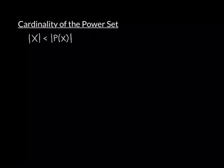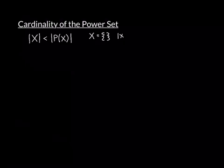Let's go through the four things. Let's start off with the simplest case: what if X is equal to the empty set — the set that contains nothing at all? Well, in that case, the cardinality of X, the cardinality of the empty set, is equal to zero. There's nothing in it.